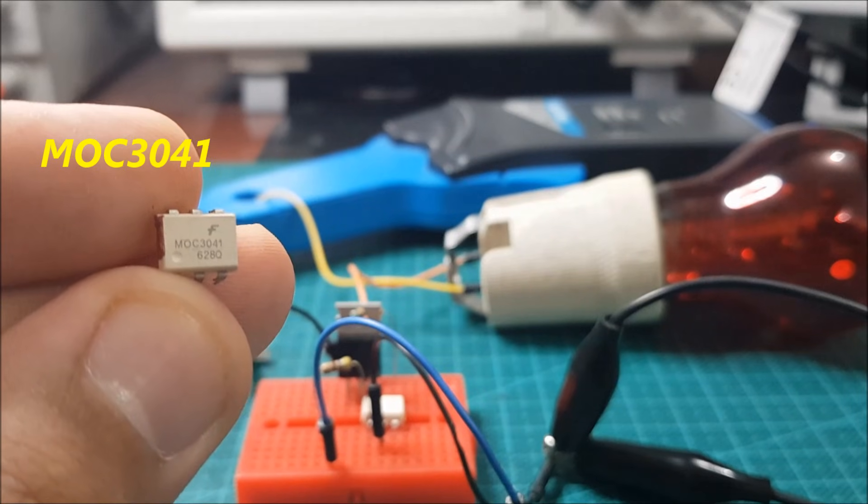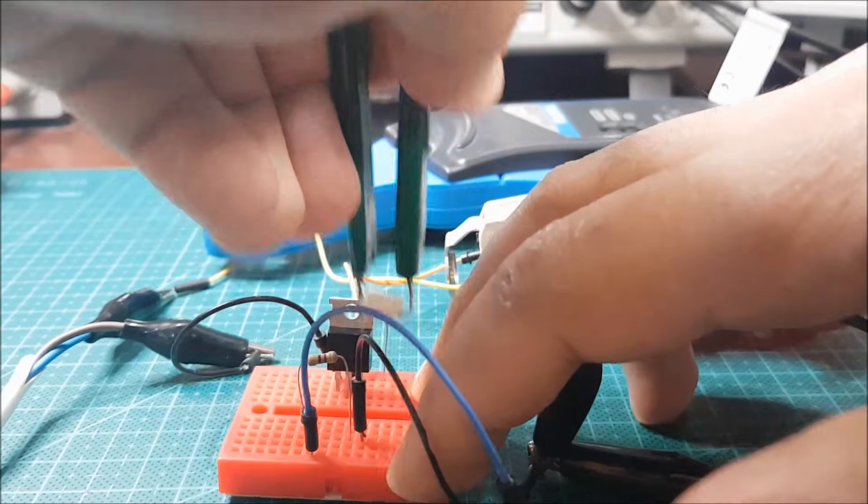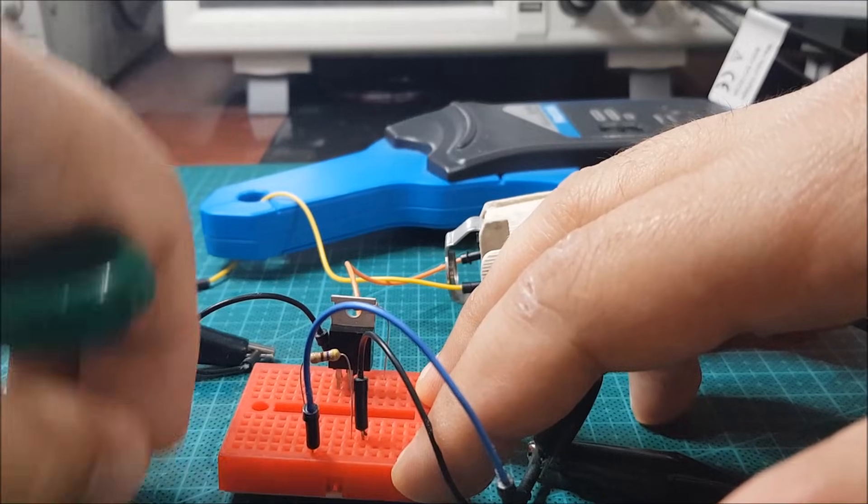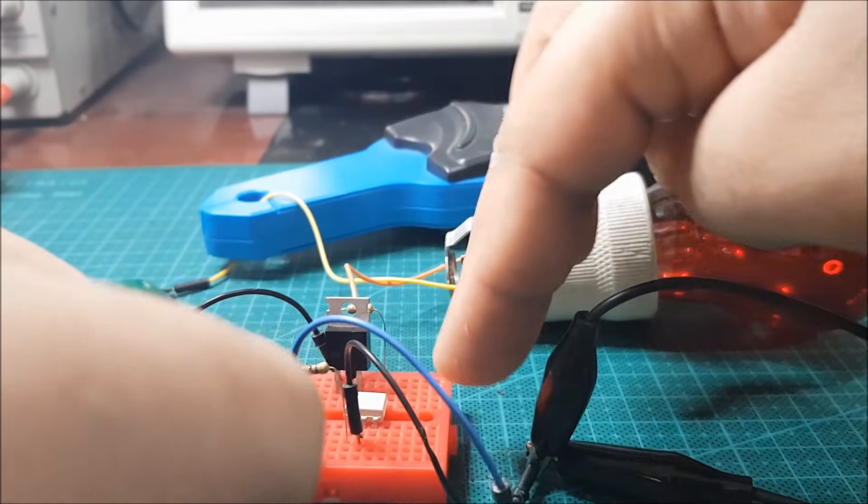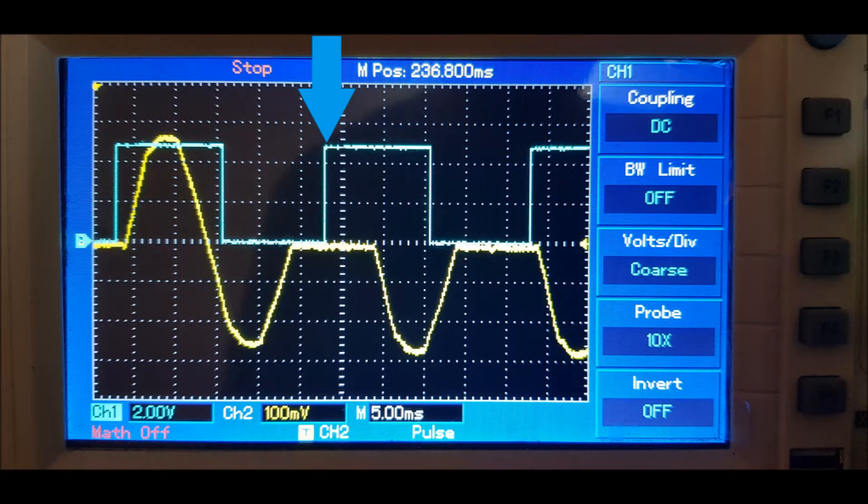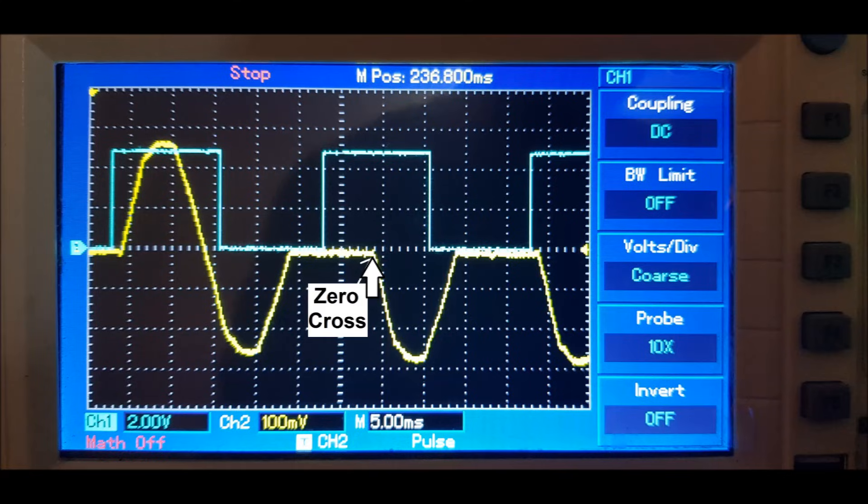Then I repeat this experiment, but this time using a triac driver with zero cross detection. In this time, as you can see, when the input signal becomes high, the output stays off. But as soon as the voltage of this cycle becomes zero, the load turns on.